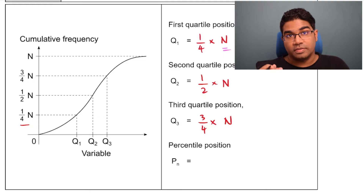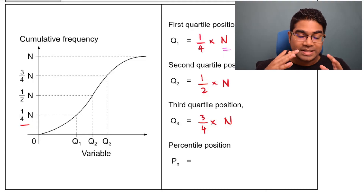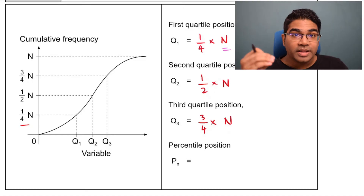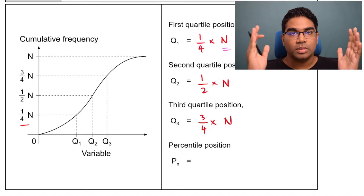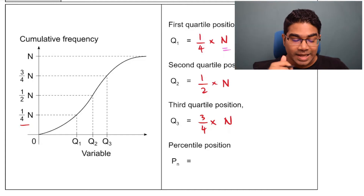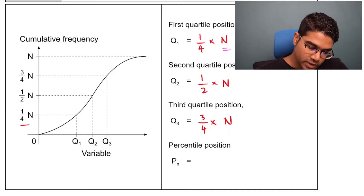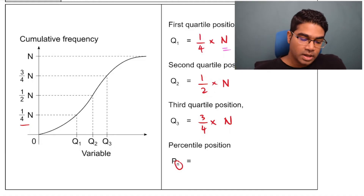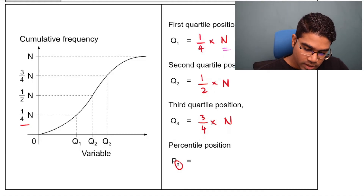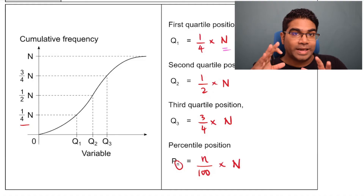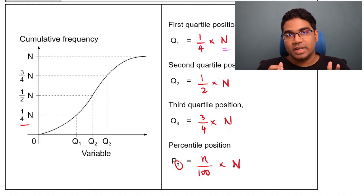These are the positions of the quartiles. A percentile is a value that divides the data set into a hundred equal parts, so there are 99 percentiles. To find the nth percentile position, that would be n divided by 100 multiplied by the total frequency. This is how we get the positions of quartiles and percentiles.